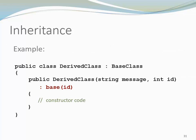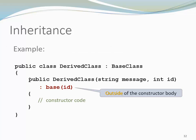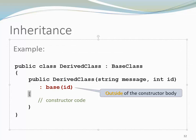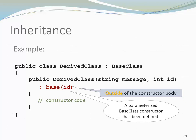Here is an example. You can see that the base and the argument list is outside of the constructor body, next to the constructor header. We could have continued on that line if there would have been more space, so we just broke up the line. But importantly, it is outside of the constructor body. In this particular case, we were using an argument that we specified — so this was a parameterized constructor that we were calling.